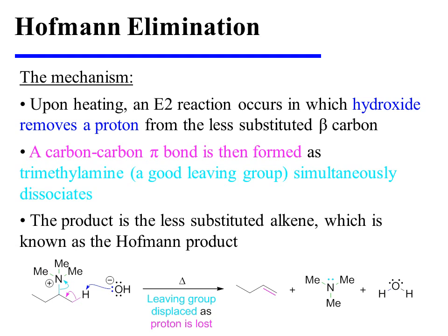Upon heating, an E2 reaction occurs in which hydroxide removes a proton from the less substituted beta carbon. A carbon-carbon pi bond is then formed as trimethylamine simultaneously dissociates as a good leaving group. The product is the less substituted alkene, which is known as the Hoffman product.